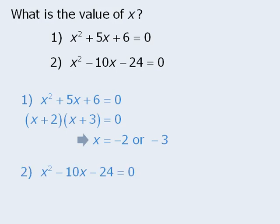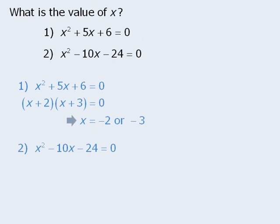Now statement 2 also provides a quadratic equation involving x. Once again, we will first factor the left-hand side. From here we can see that if x minus 4 times x minus 6 is equal to 0, then x must equal 4 or 6. From statement 1, we concluded that x must equal negative 2 or negative 3. And from statement 2, we concluded that x must equal 4 or 6.